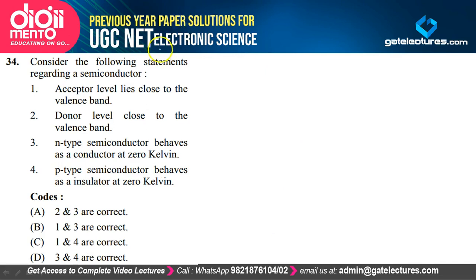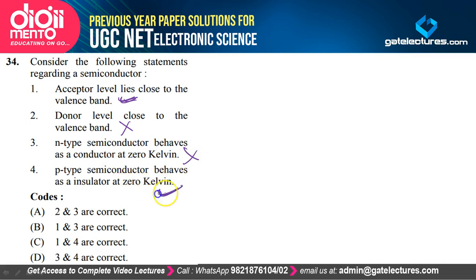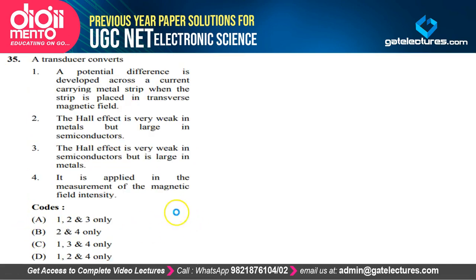Question 34: Regarding semiconductors — the acceptor level lies close to the valence band, which is true. Donor level lies close to the valence band — false. N-type semiconductor behaves as a conductor at 0 Kelvin — false. P-type semiconductor behaves as an insulator at 0 Kelvin. Only statements 1 and 4 are true, so option C is correct.